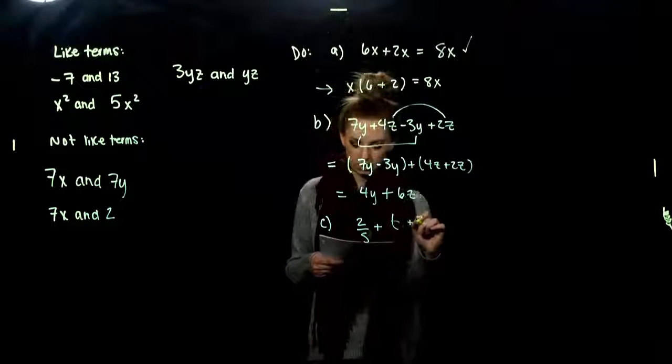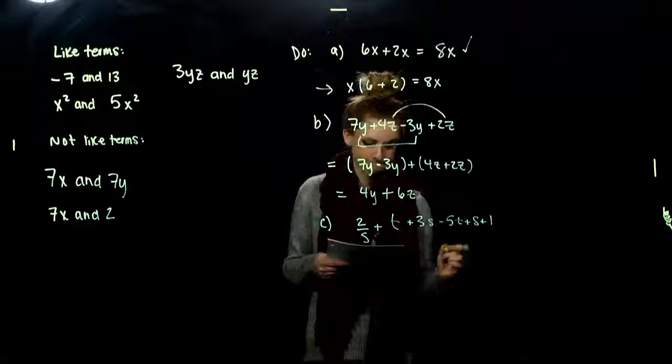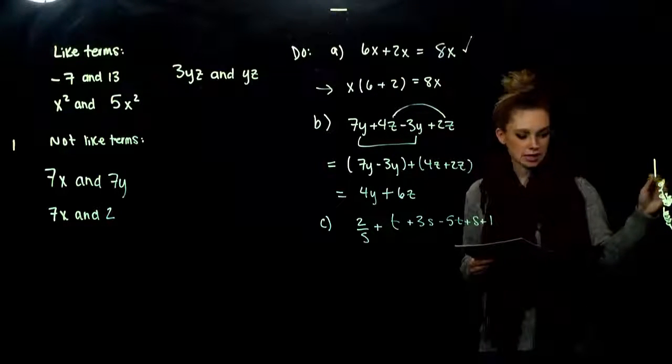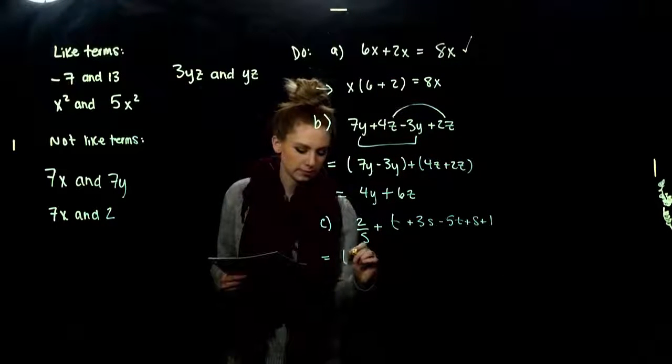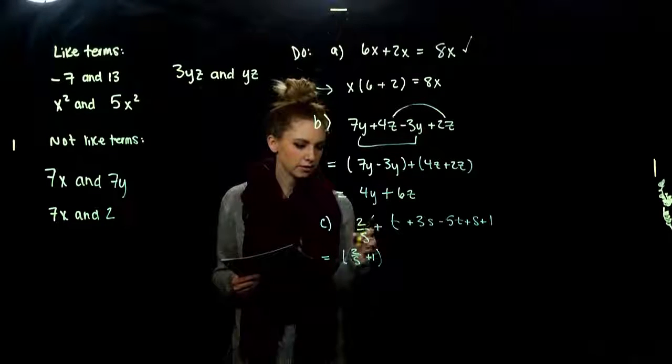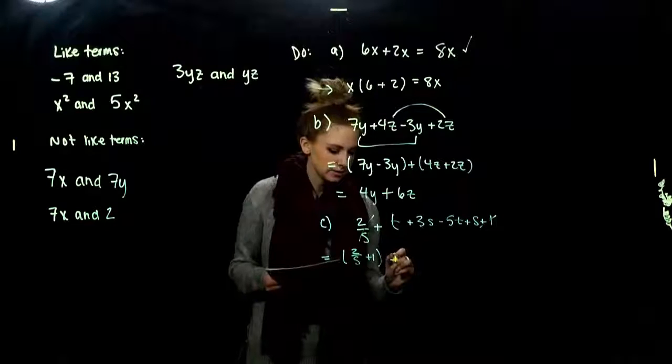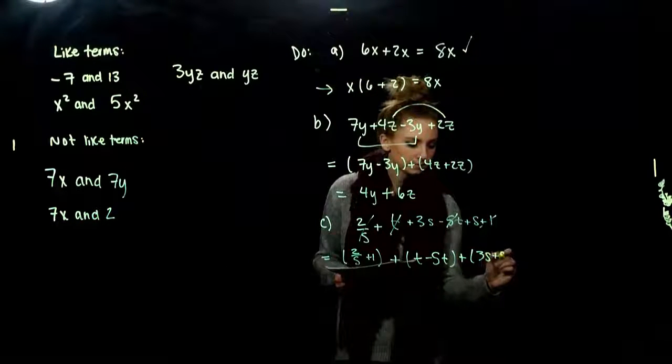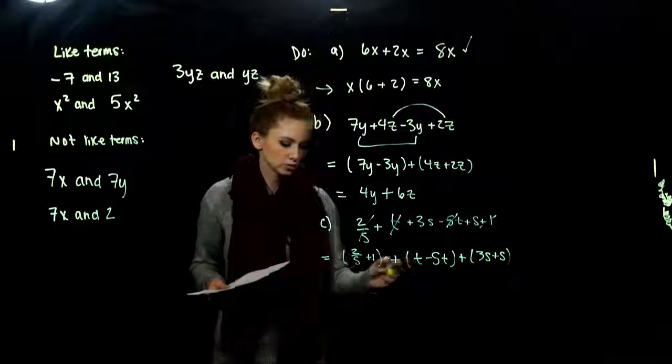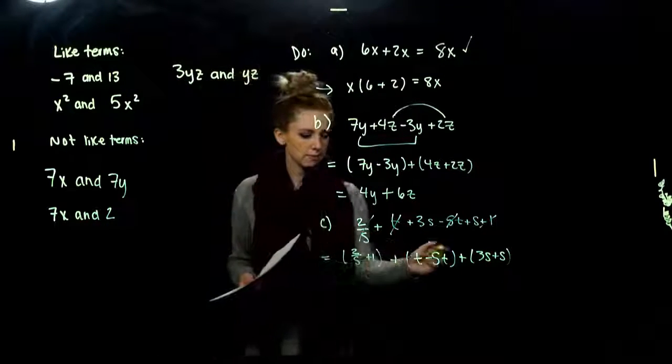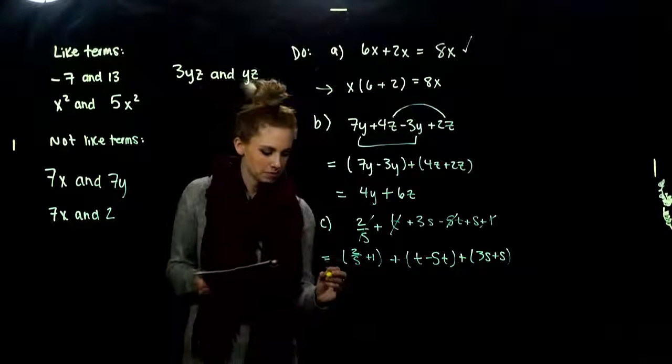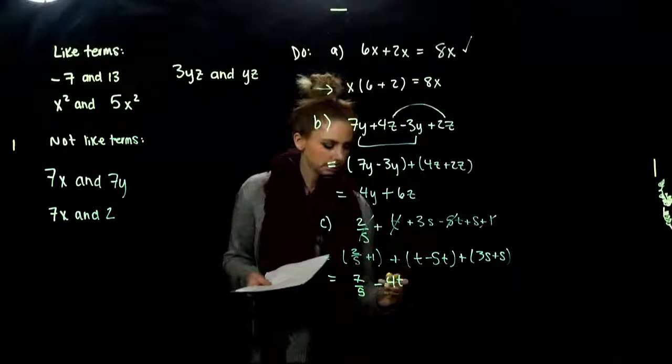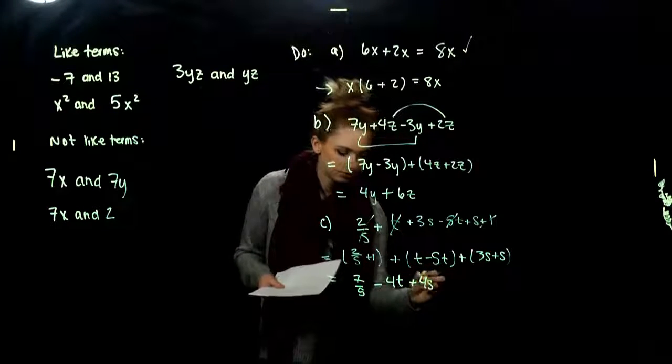Looking at that first example, I have 6 factors of x and 2 factors of x. So altogether, naturally, how many are we going to have? 8 factors of them. But a way that we can kind of come upon that is by asking, what do these two share in common that I can take out of both of them? That factor of x. If I take x out of the first one, I have 6 over there and 2 on the right. So altogether, I have 8 factors of x. If it's helpful to look at it in this way as factoring to combine those like terms, go that route. But if you're comfortable with the first, run with that.